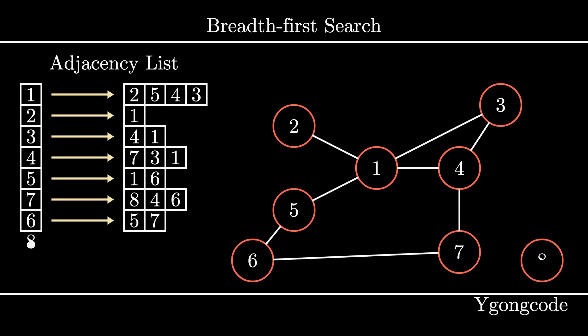One way to represent the graph is using an adjacency list. An adjacency list is a mapping of nodes to its connected neighbors. You can implement this as a map with the key being a node and the value being a list of nodes that are connected. So here we have a graph on the right and its corresponding adjacency list on the left.